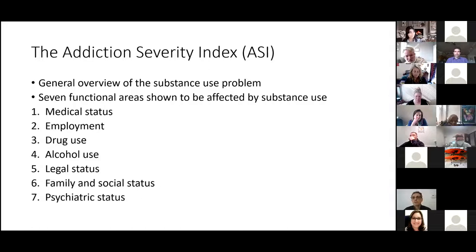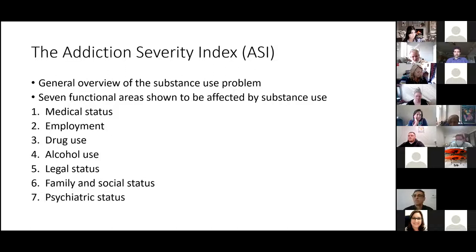Back when I worked at the VA hospital in 1997, we used something called the Addiction Severity Index. This goes back a long time in the field of addictions. It's a general overview of the substance use problem, dividing problems into seven functional areas: the medical condition of the individual, employment status, drug and alcohol use, legal status, family and social status, and psychiatric status. They had a computerized program to administer the ASI to all patients in the methadone or substance use disorders program.